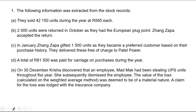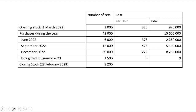They say the following information was extracted from the stock records. They sold 42,150 units during the year at R595 each. And 2,000 units were returned in October to Zang Zaka — that is the September return. That is very, very important. So they were returned back to the supplier and were returned in October. So if they were returned in October, the question is, when would they have been purchased?